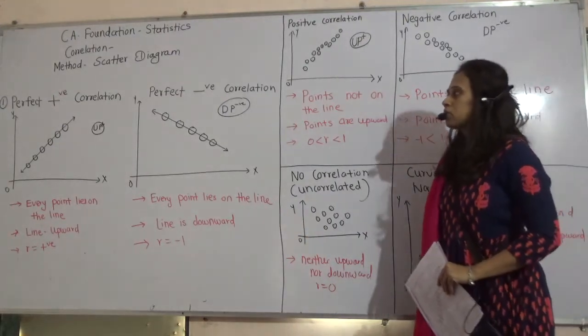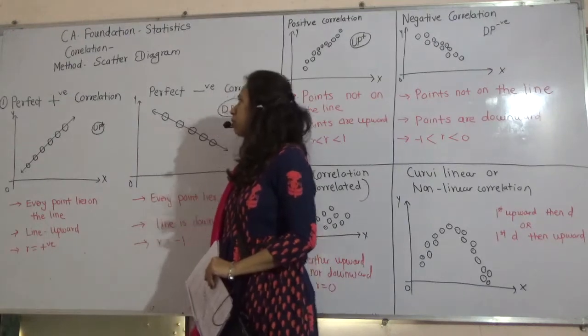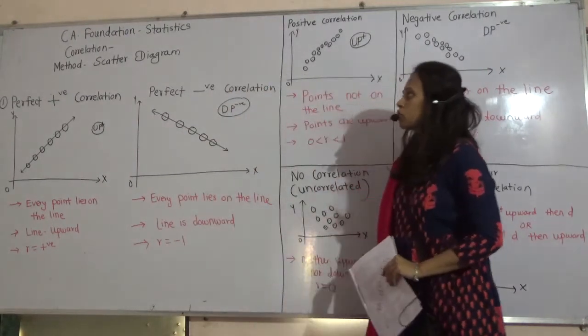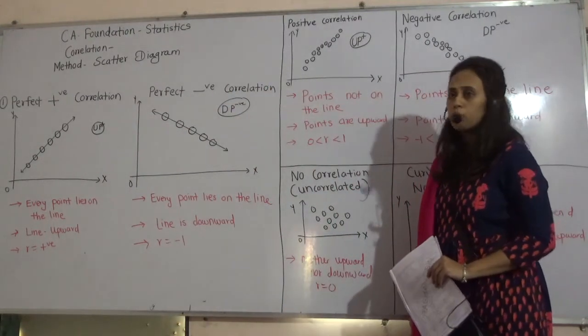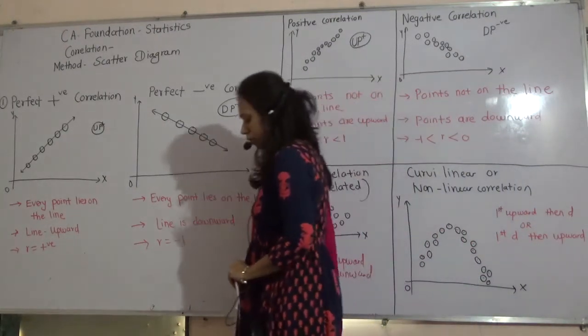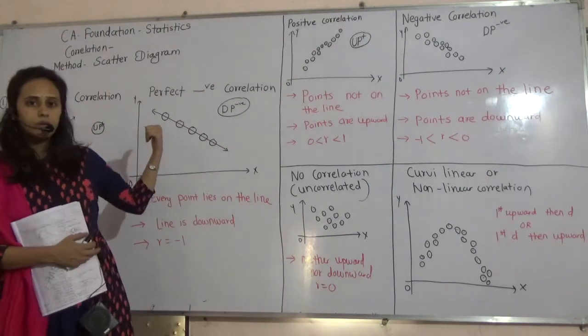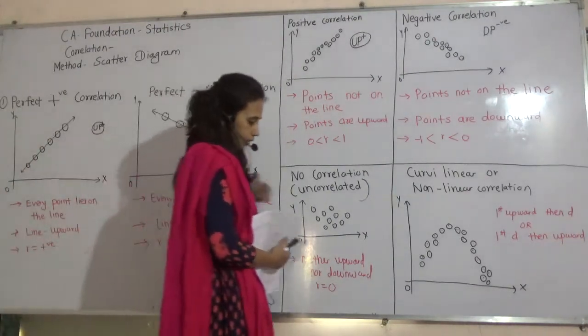In the last lecture, we have covered two methods, Spearman's and Concurrent Deviation Method. Now, third method is Scatter Diagram. One more method is there, Carl Pearson. But in this lecture, we will discuss this third method, Scatter Diagram.